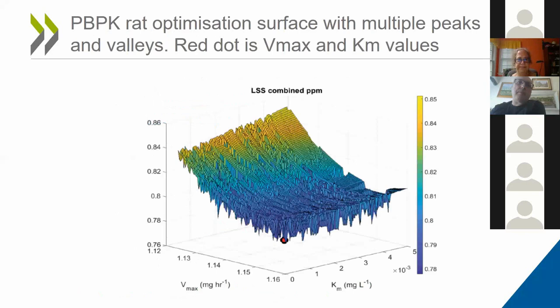This is an optimization surface from the experimental data set shown in the two slides before. As you can see, it's riddled with peaks and valleys, making it very difficult to estimate the parameters of interest. There are special algorithms that deal with this problem. In this case, the estimates we want are represented by the red dot at the bottom, which is an area full of peaks and valleys, representing low values. Sensitivity analysis can help us gain confidence with that estimate.